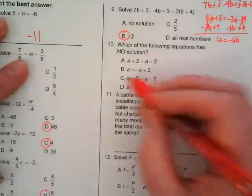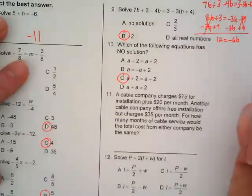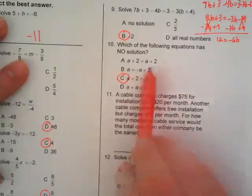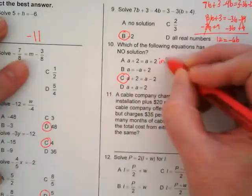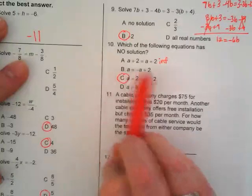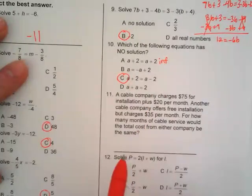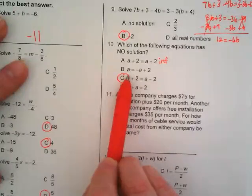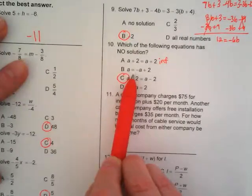Number 10 is C. When I look at number A or letter A, I realized right away it's got infinite solutions because I've got exactly the same thing on both sides of the equation. I skipped B because...